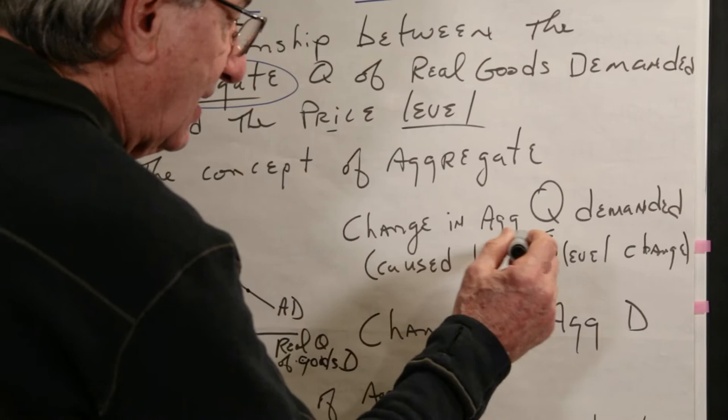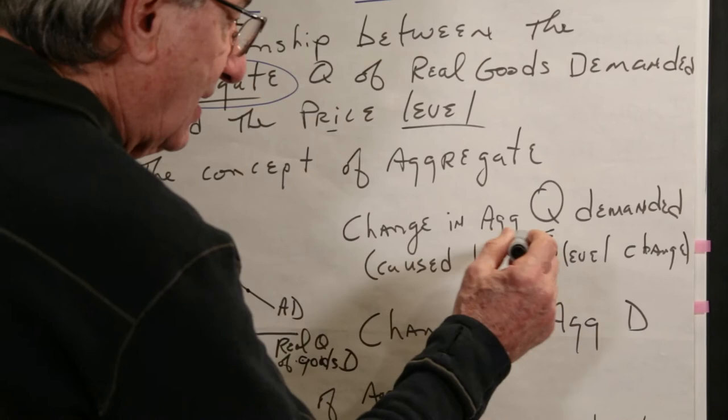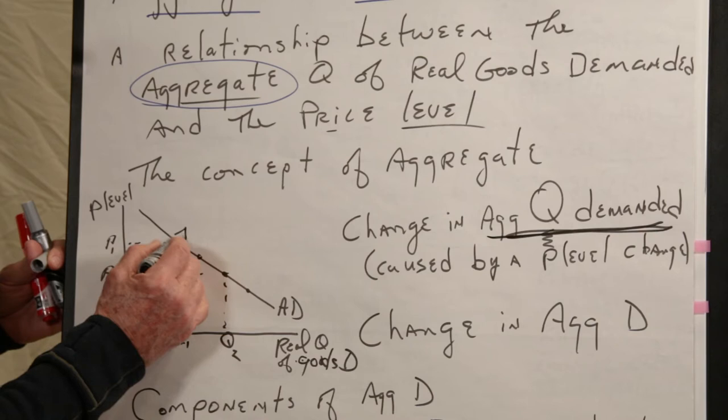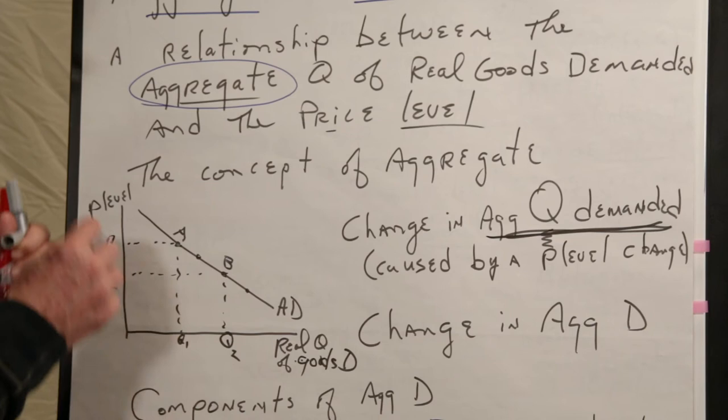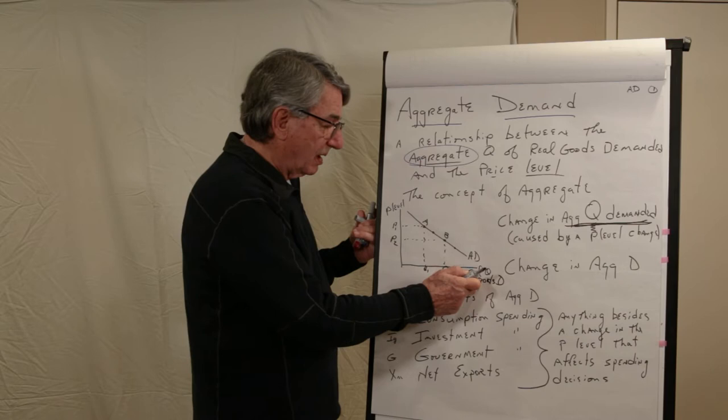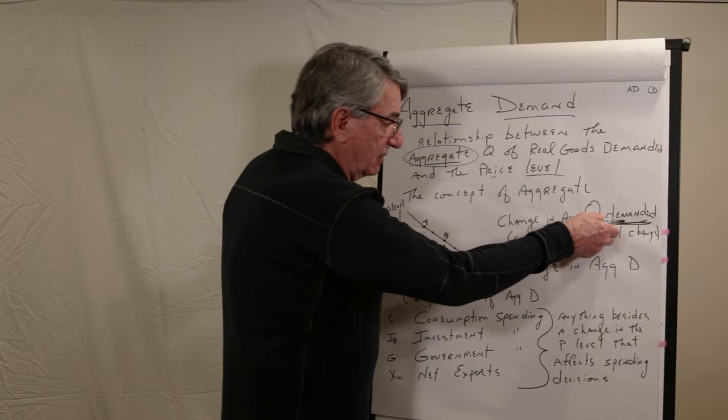So in this case, this would be a change in aggregate quantity demanded. It's a movement from one point A to another point B here along the aggregate demand curve. And it's caused by a change in the price level. So when you change the price level, you get a change in the quantity of goods demanded. You move from point A to point B along the graph. And that's called a change in aggregate quantity demanded.